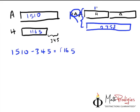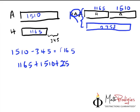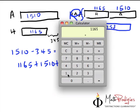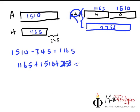Helen is 1,165. Andrew is 1,510. So the amount Rosie has is 1,165 plus 1,510 plus 2,758, which gives you the answer of 5,433.